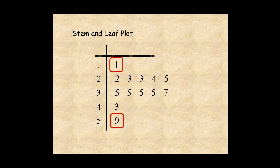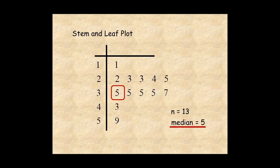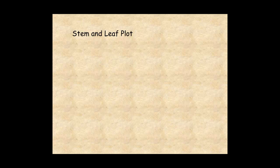You can see there are 13 numbers in the data set, and the median is 5. Here's how to draw a stem and leaf plot step by step.